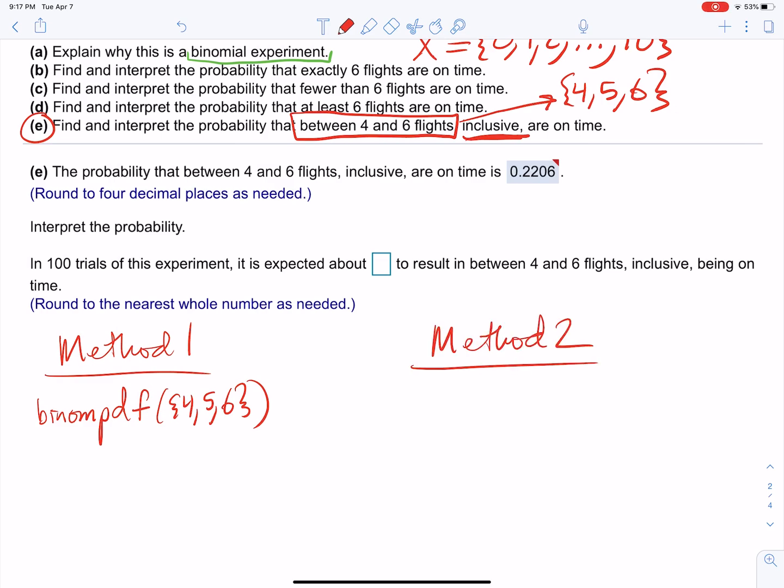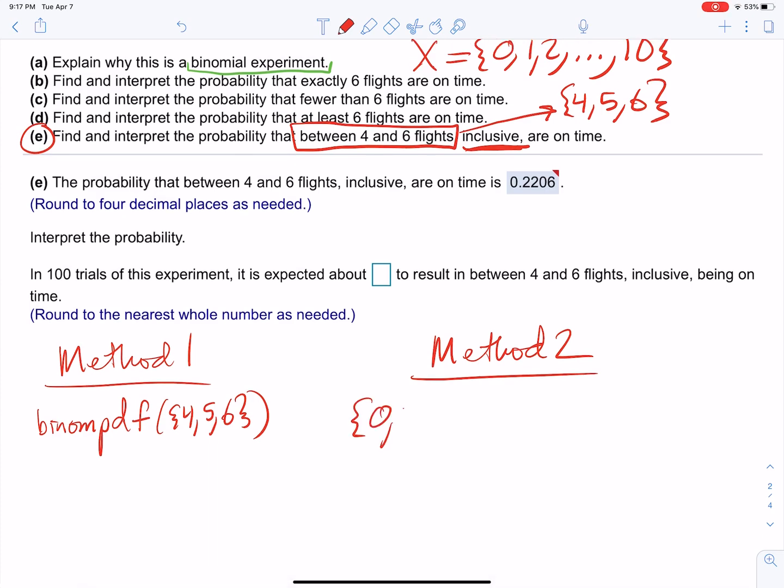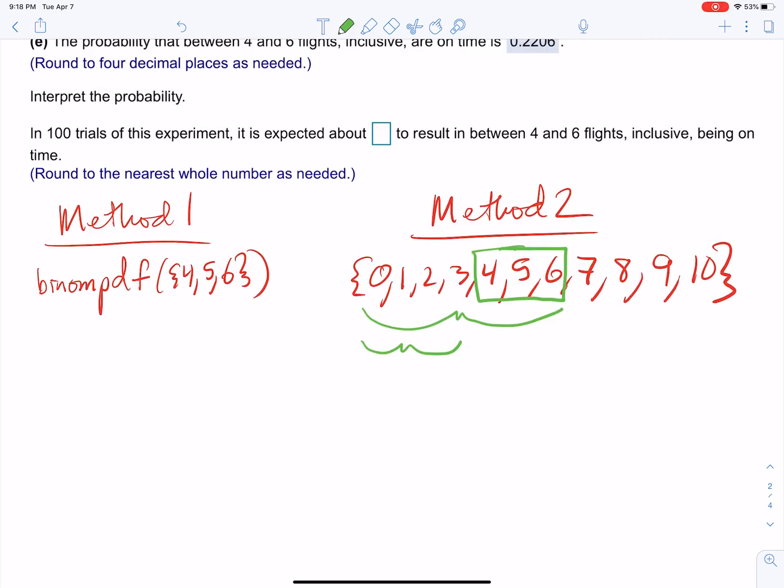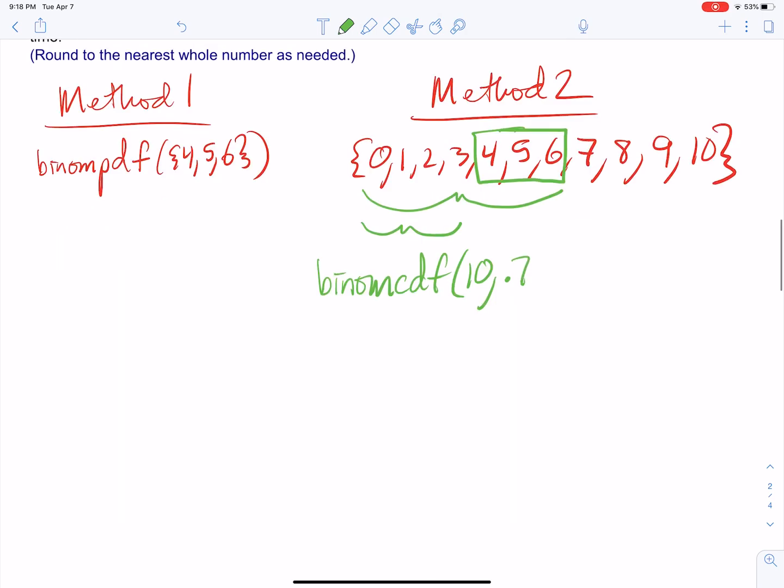So let's see. If I put zero, one, two, three, four, five, six, seven, eight, nine, and ten here, and I want four through six, what I have to do is take these values from zero to six and then subtract from zero to three. Right? So I take the values from zero to six—that's binomcdf(10, 0.75, 6)—and then I just subtract binomcdf(10, 0.75, 3).